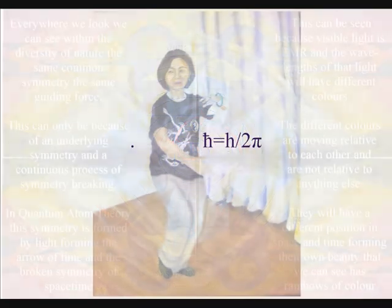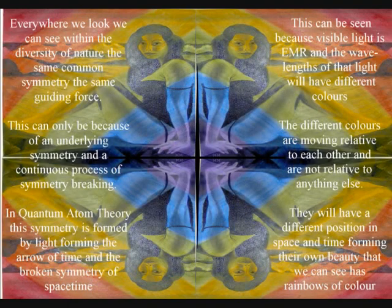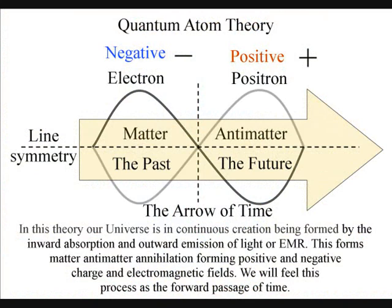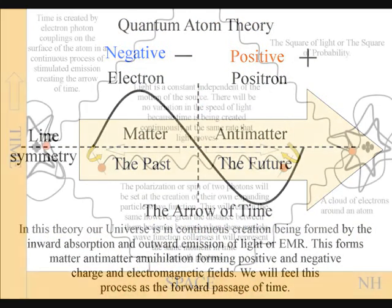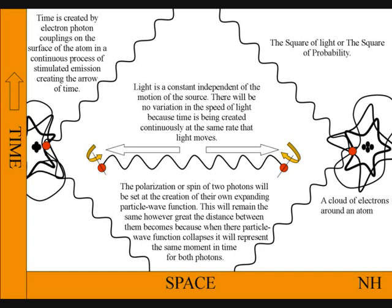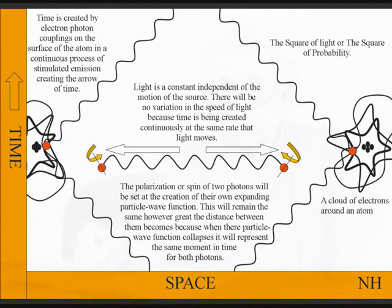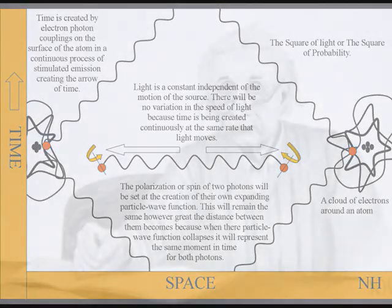The deep fundamental difference between quantum and classical mechanics is that quantum mechanics represents the forward passage of time itself. Objects form their own space-time geometry, forming a square of probability. Therefore we have Einstein's famous equation, energy equals mass times the speed of light squared.